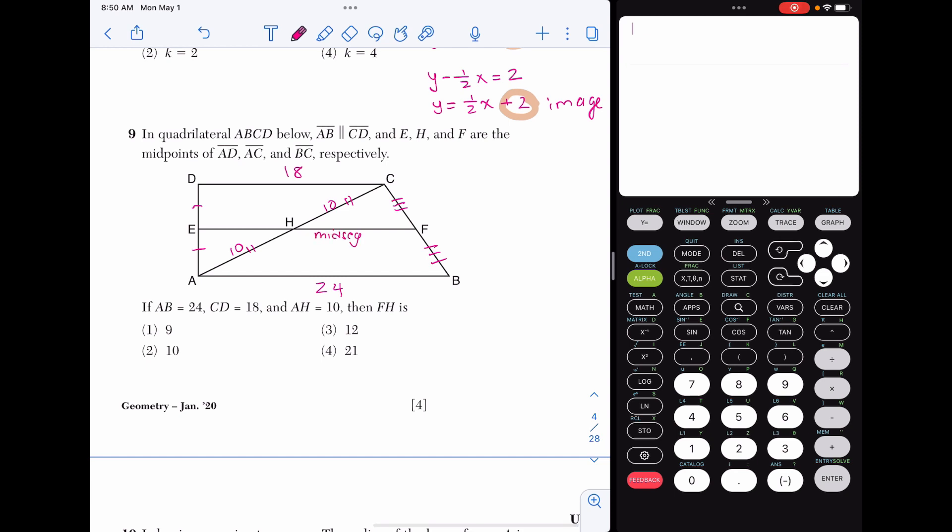HF is something called a midsegment. A midsegment is simply a line segment that connects two midpoints. I know H and F are midpoints already. A midsegment is always half the side that it is parallel to in that triangle. So if we know that side AB is 24, FH must be half of that, and that must be 12, and that's choice 3.